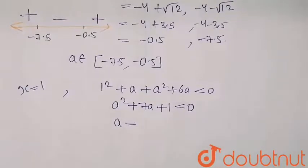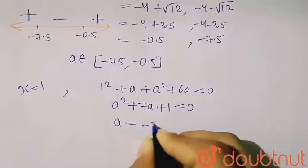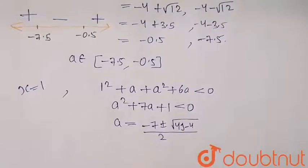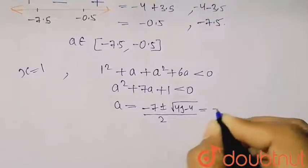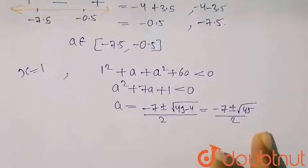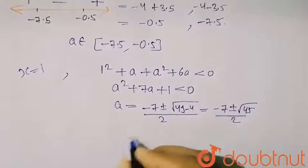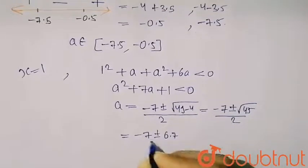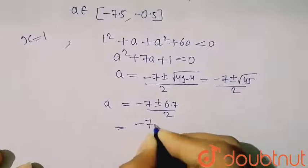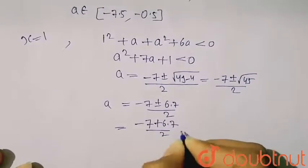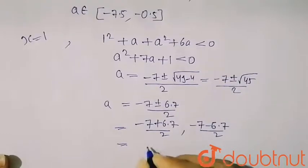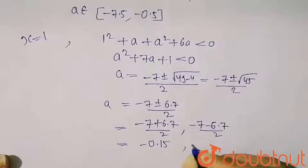Applying (-b ± √(b² - 4ac)) / 2a, here it gives (-7 ± √(49 - 4)) / 2, which means (-7 ± √45) / 2. Now √45 can be approximately 6.7. So from this I will get two values for a: one is (-7 + 6.7) / 2 = -0.15, and another value is (-7 - 6.7) / 2 = -6.87.